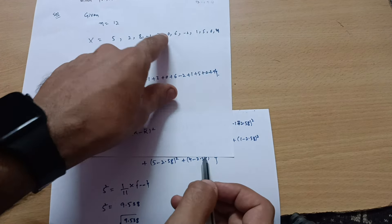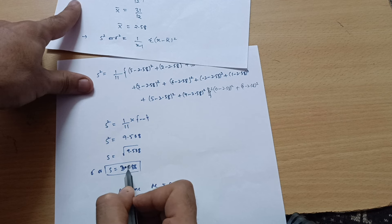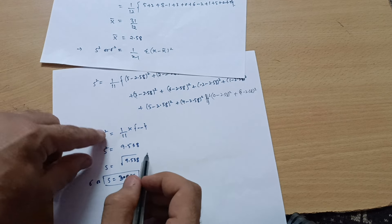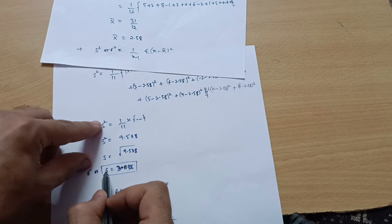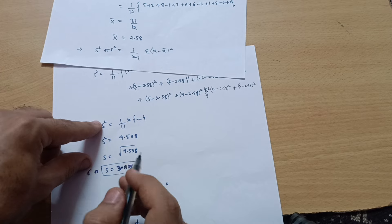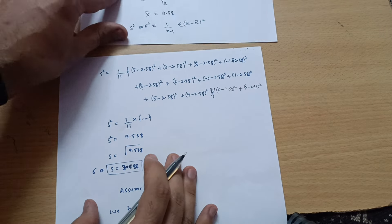S square is equal to 9.538, then S is equal to—transfer this square into right hand side—you will get S is equal to root of 9.538, so sigma or S is equal to 3.088. This is the standard deviation. S square is called the variance, the S is called the standard deviation. You should remember this difference over here.